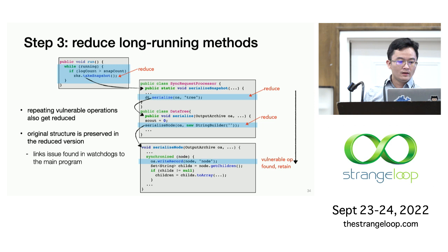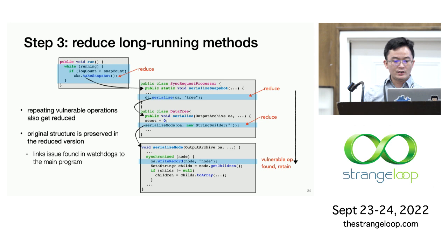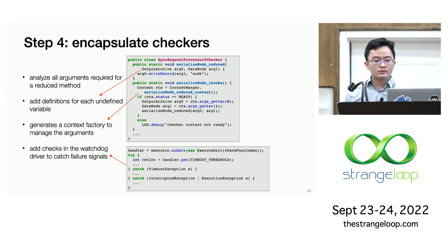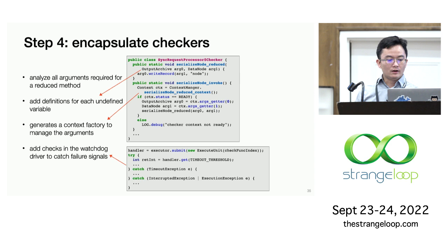Afterwards, we may have some vulnerable operations that recur repeatedly in the code, and we will also reduce them. During this process, the main program structure is actually preserved in the reduced watchdogs. This structure can later help you localize where the issue is when the watchdog generates alerts. Once all entry methods are reduced, OmegaGen encapsulates non-empty ones into the watchdog checkers. Since these code snippets may be incomplete because of missing definitions, the tool analyzes the variables needed in a reduced method and adds proper definitions. It then generates a context factory to manage those arguments for those checkers, and finally adds some basic safety and liveness checks in the watchdog driver to catch failure signals at runtime.